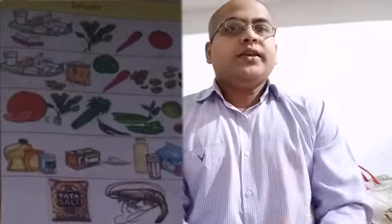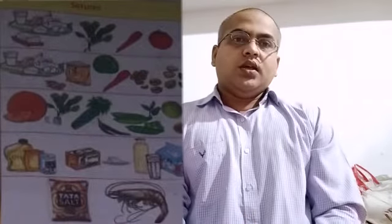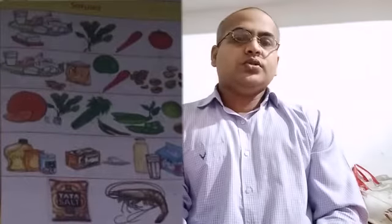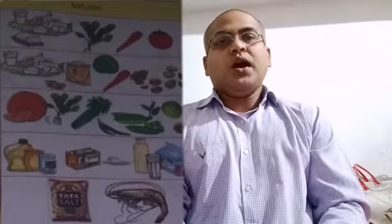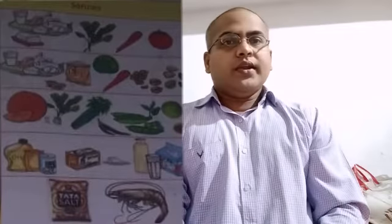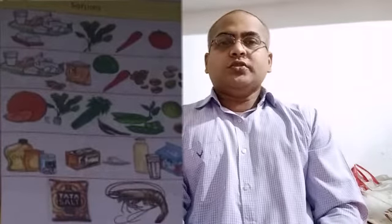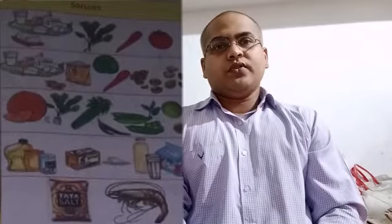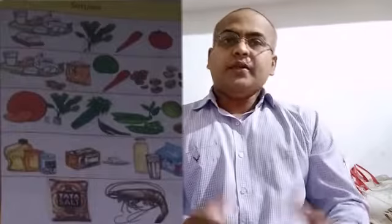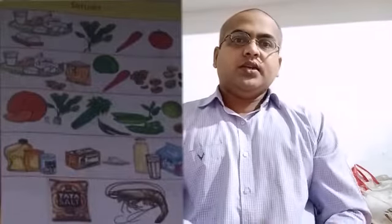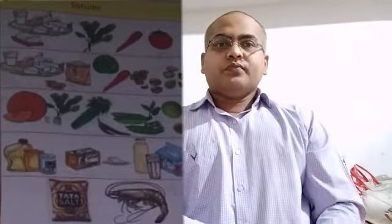The next thing is: what are the different sources of food? Simply, there are two sources of food — one is plant and the other is animal source. From plants we get cereals, pulses, oil seeds, vegetables, fruits, medicines, and several other things. From animals we get milk and milk products, eggs, meat, and even oil.